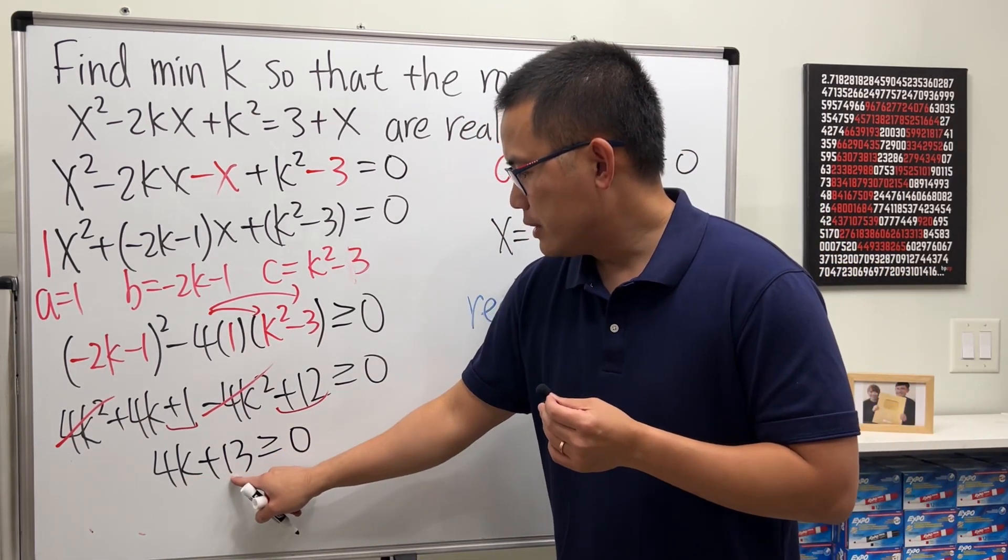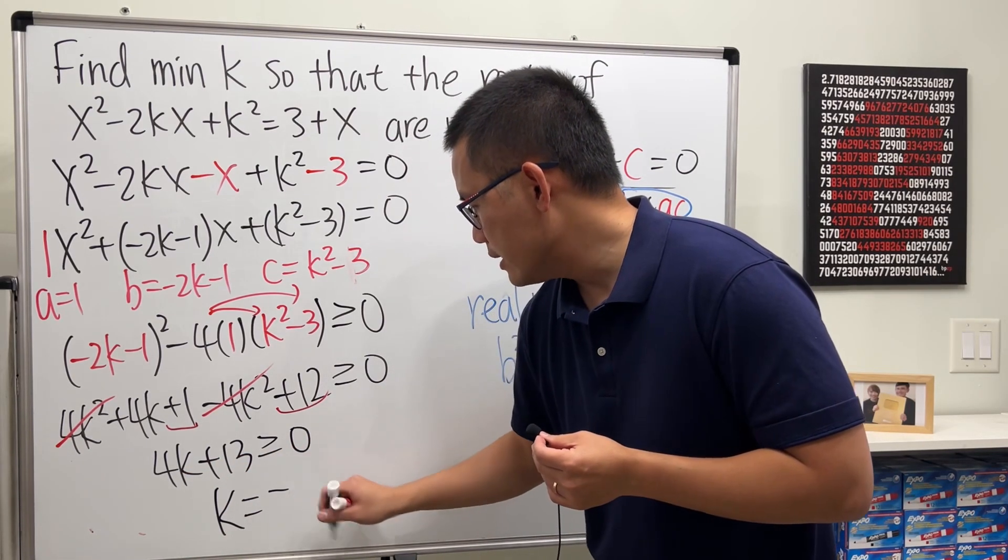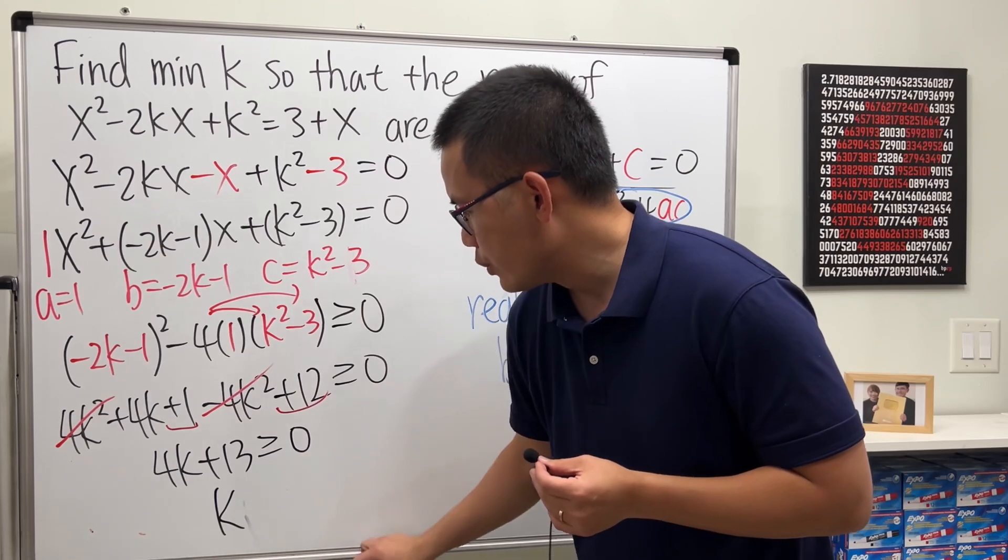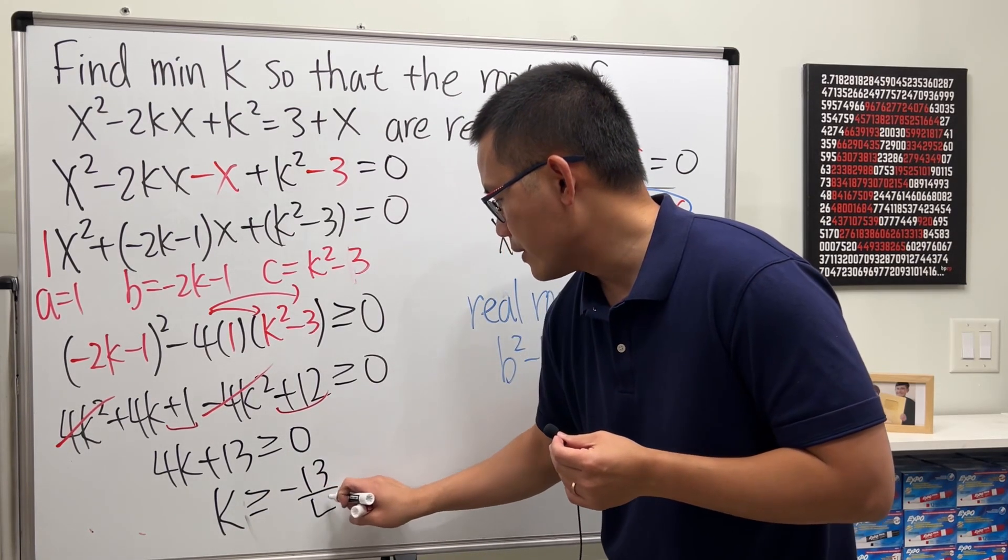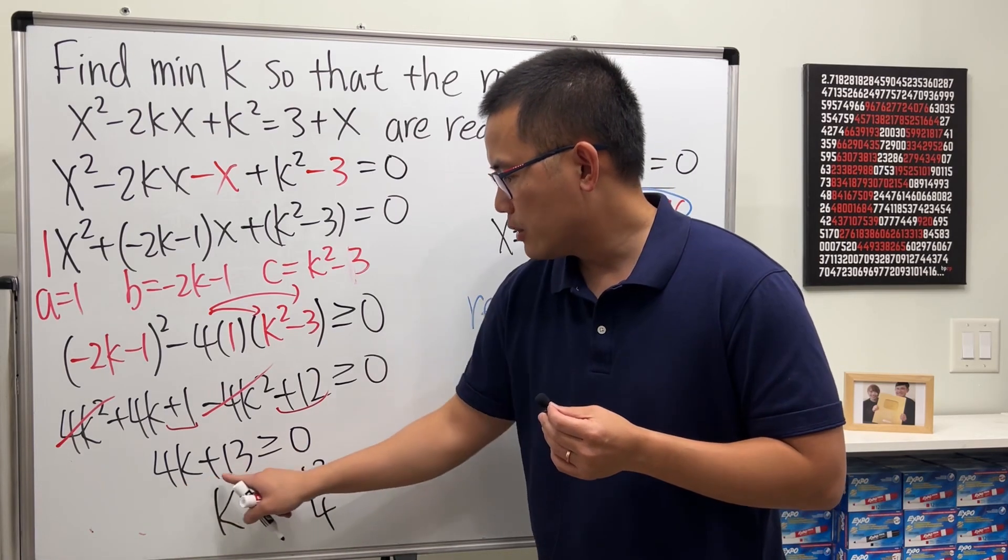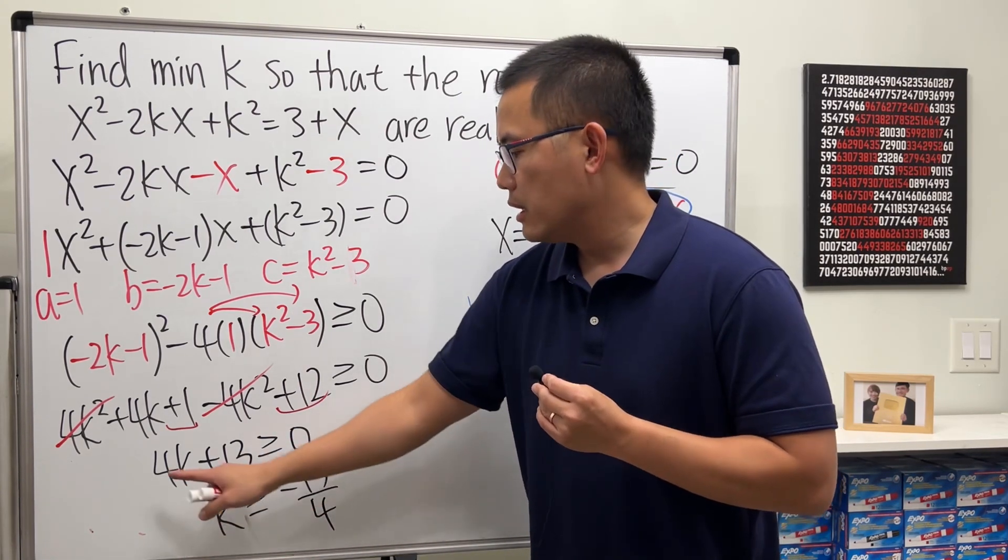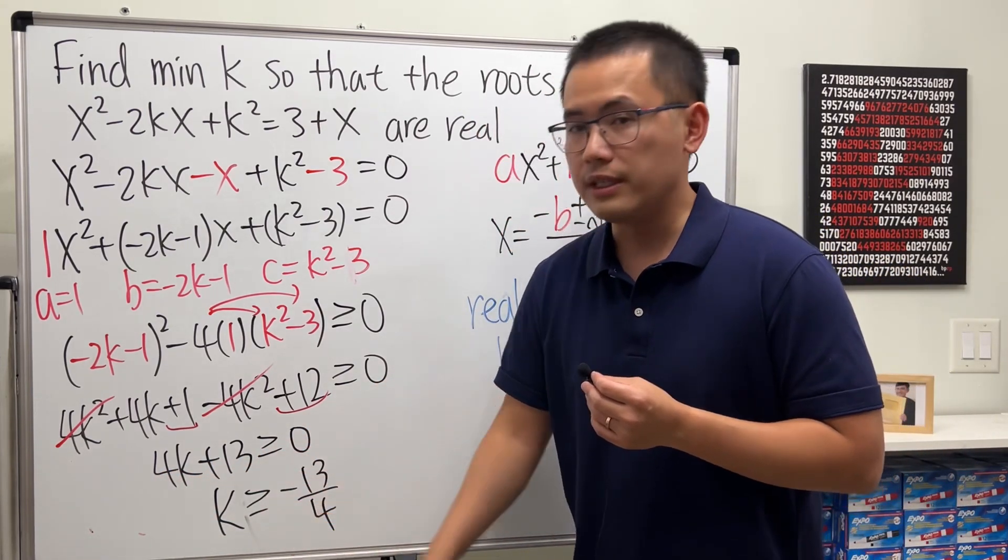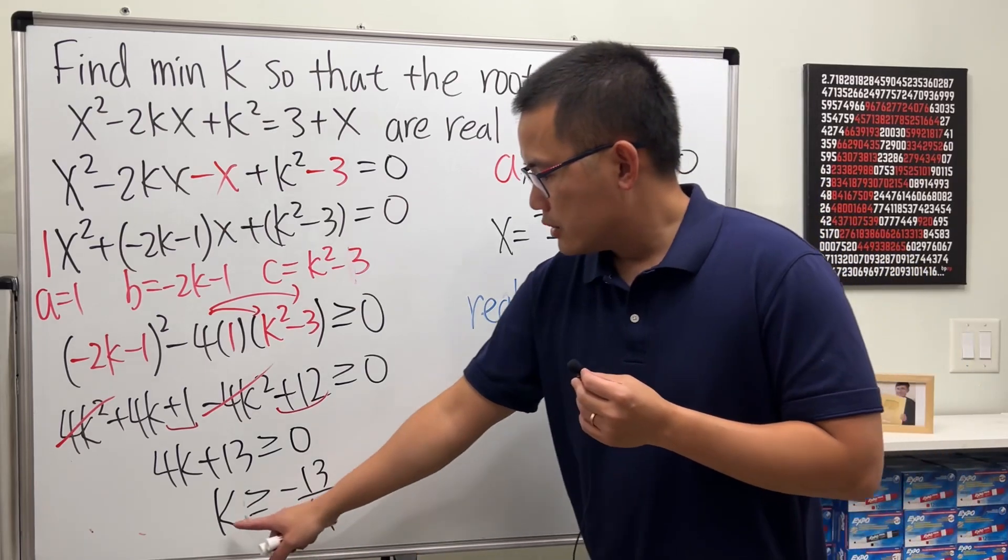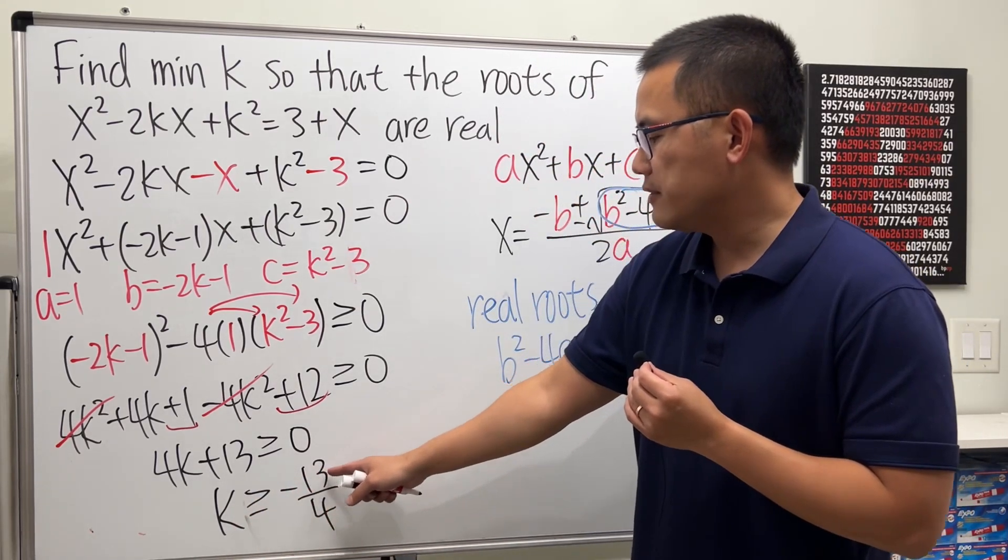Now put this to the other side, divide both sides by 4. So k is greater than or equal to negative 13 over 4. And notice when we bring this to the other side, I'm just subtracting the 13 from both sides, and then we divide positive 4 to both sides, so we did not have to switch the inequality.